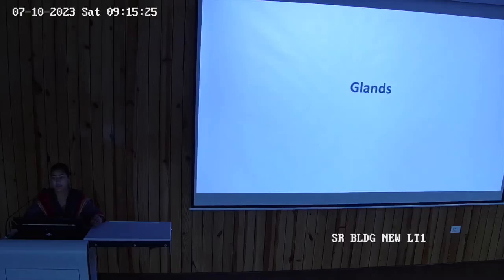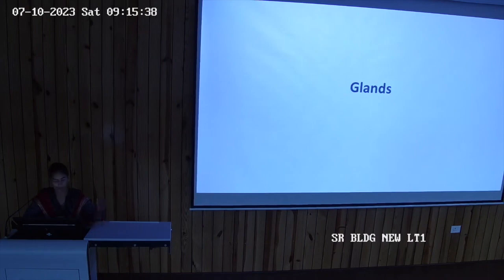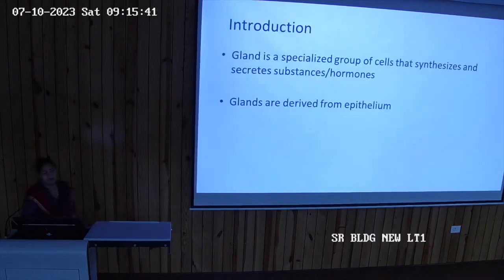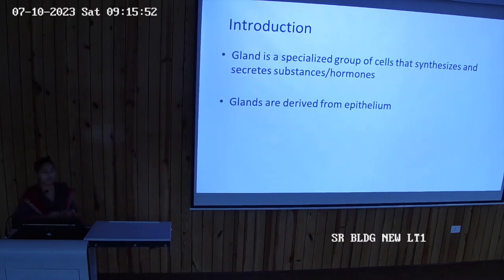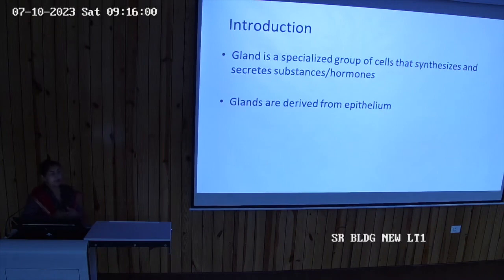The lining or boundary of a particular organ is called epithelium. It can be an inner lining or an outer one — like in skin it is outer, and in vessels it is inner. A gland is basically a folded epithelium, a group of cells that secretes substances. These substances can come from endocrine or exocrine glands, and the derivation of these glands takes place with the help of epithelium.